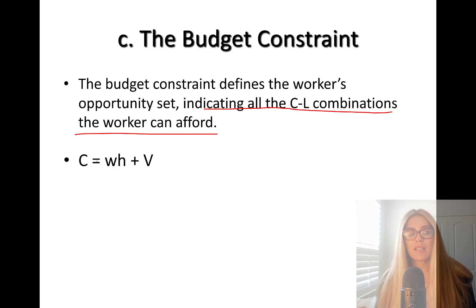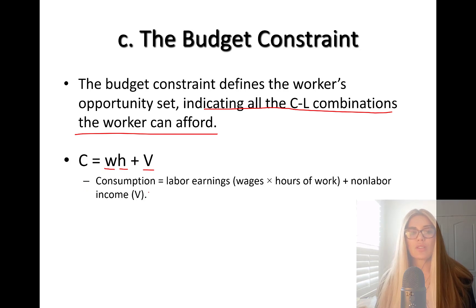Consumption is equal to W, the wage rate, times number of hours worked, H for hours worked. V is non-labor income. So consumption is a sum of labor earnings, which is wages W and hours of work. This is what you earn in the labor market, plus non-labor income V.